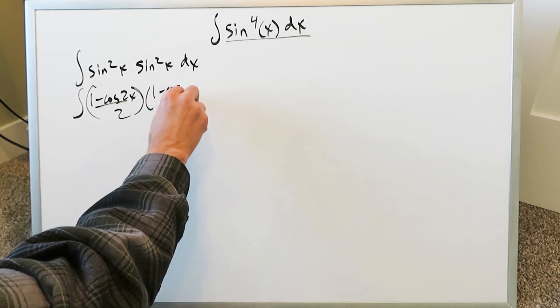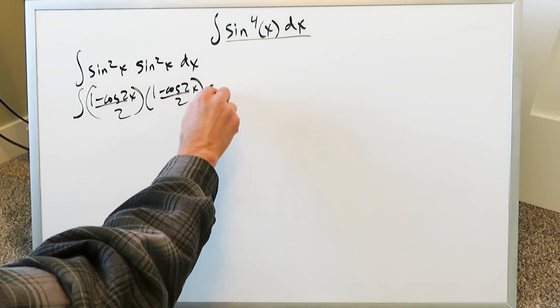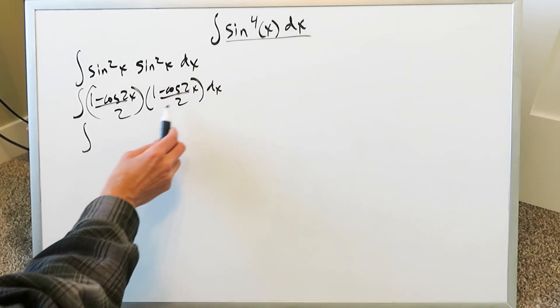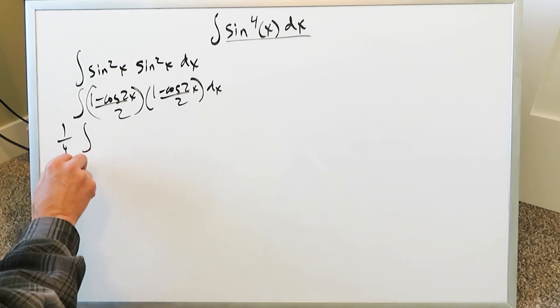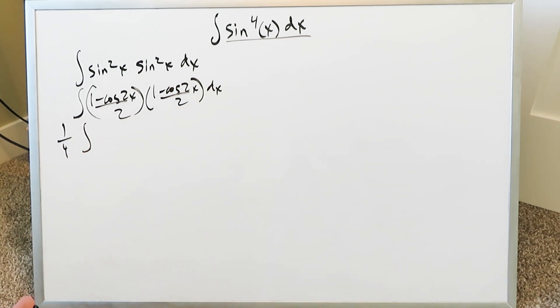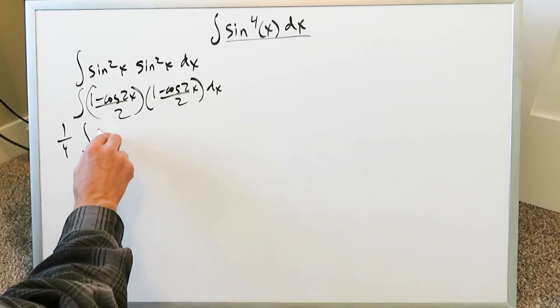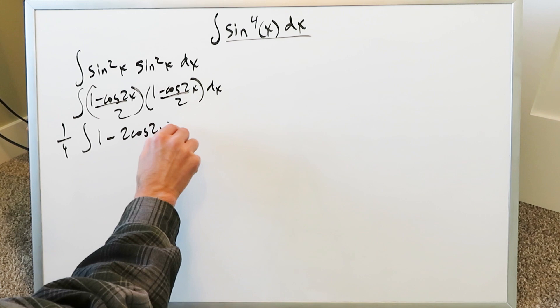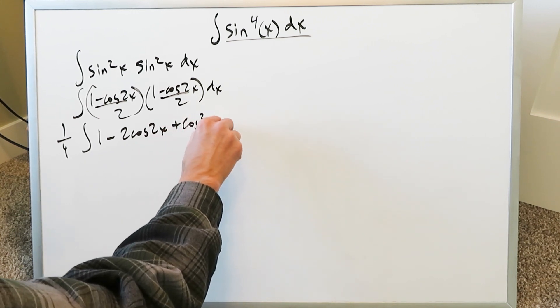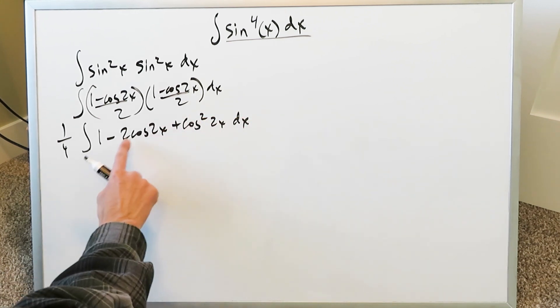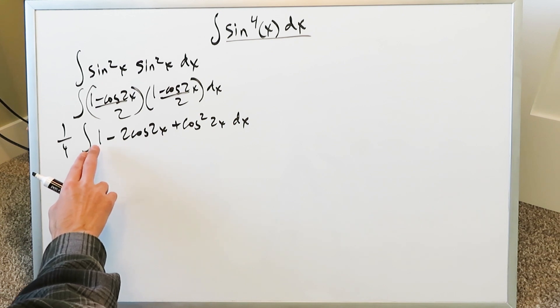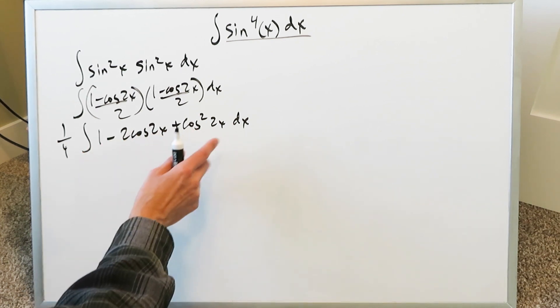We have another 1 minus cosine 2x over 2 and then dx and you can multiply this and bring the twos out in the denominator as a coefficient right there. You have a minus b times a minus b and you can open that up. You'll have a 1 minus 2 cosine 2x plus cosine square 2x dx. You know it's a minus b times a minus b is equal to a square minus 2ab plus b squared.